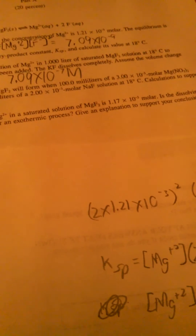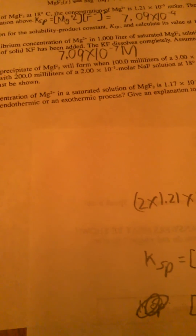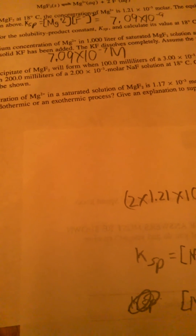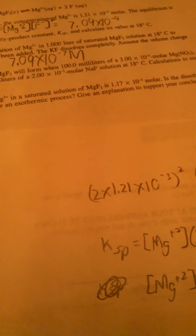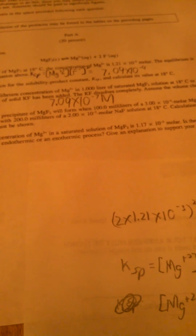The third part asks: predict whether a precipitate of magnesium fluoride will form when 100 milliliters of 3 times 10 to the negative 3 molar magnesium nitrate solution is mixed with 200 milliliters of 2 times 10 to the negative 3 molar sodium fluoride solution at 18 degrees Celsius.